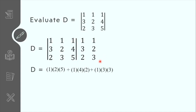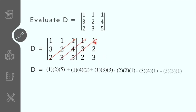Next, let us solve for the second 3 terms. Take note that the second 3 terms are all negative, and we start here at the last elements of the first column. So minus 2 times 2 times 1, minus 3 times 4 times 1, minus 5 times 3 times 1. Simplifying this, we will get negative 4, and that is the value of our determinant.